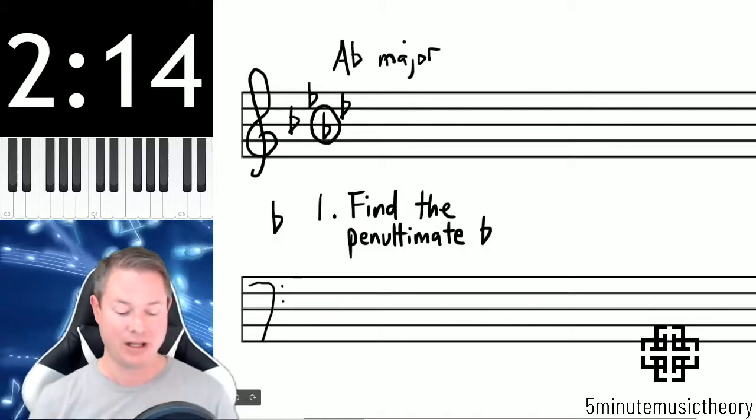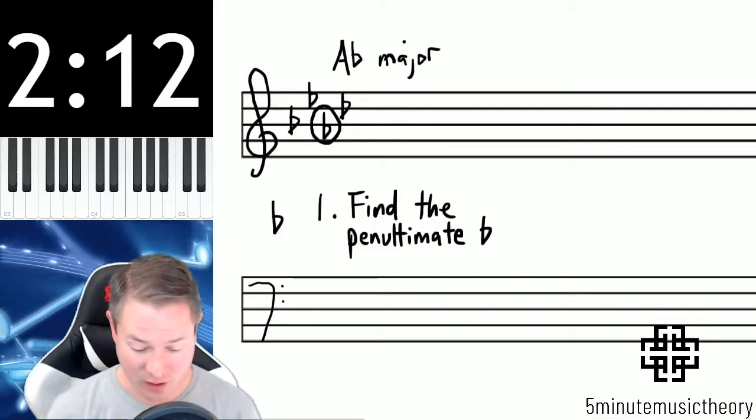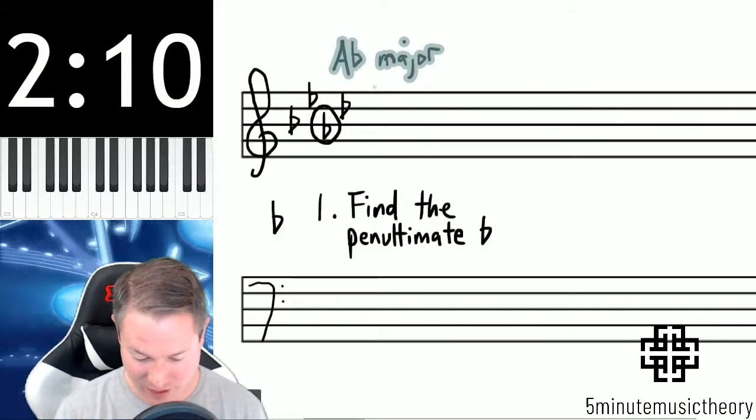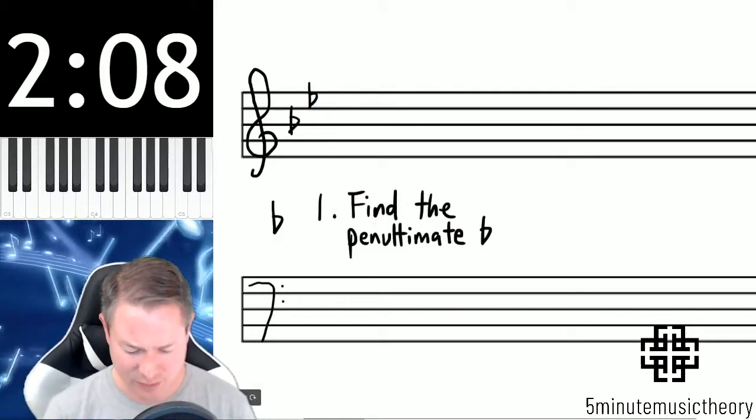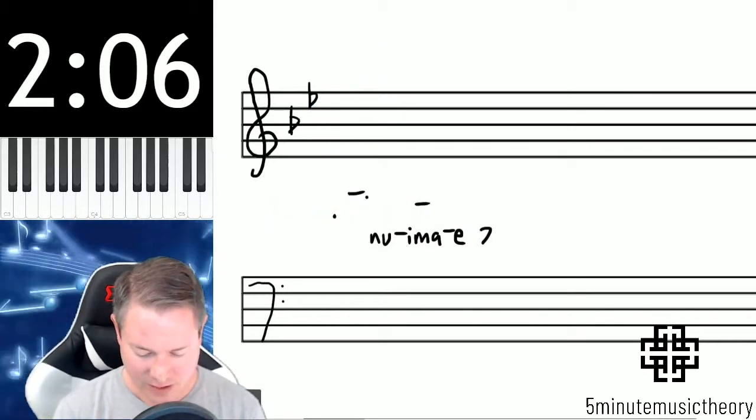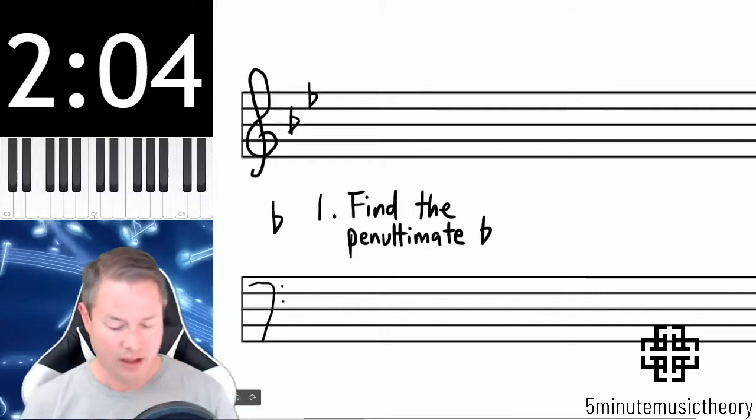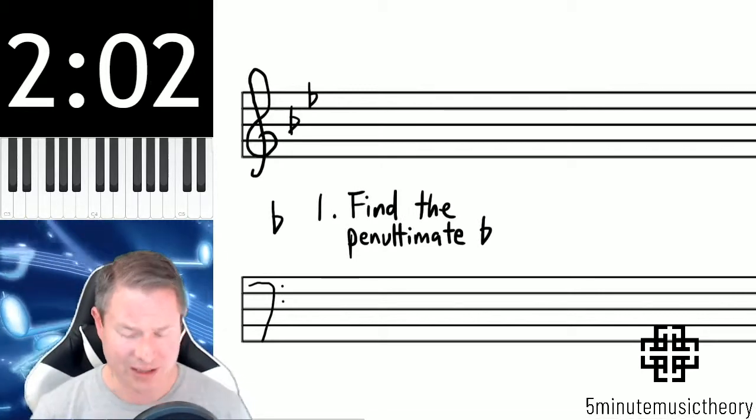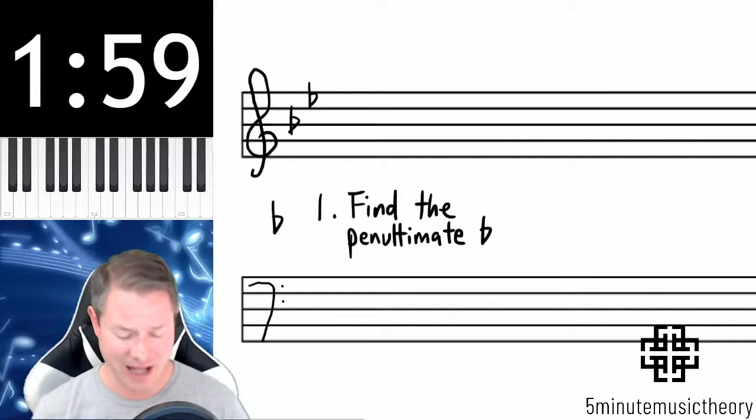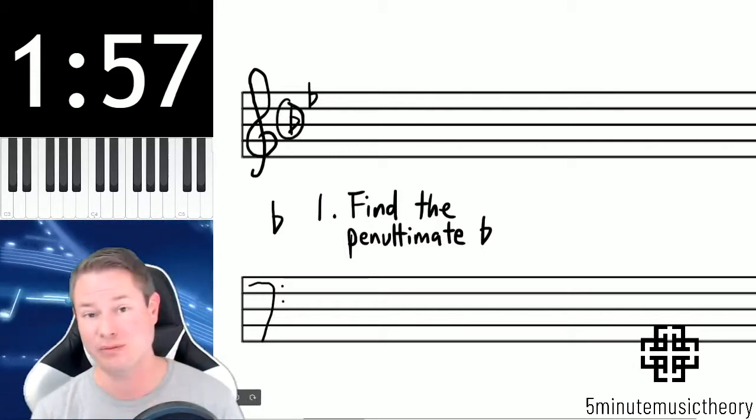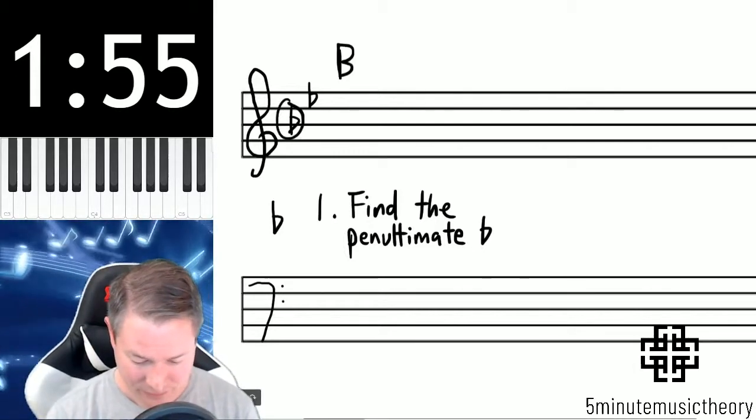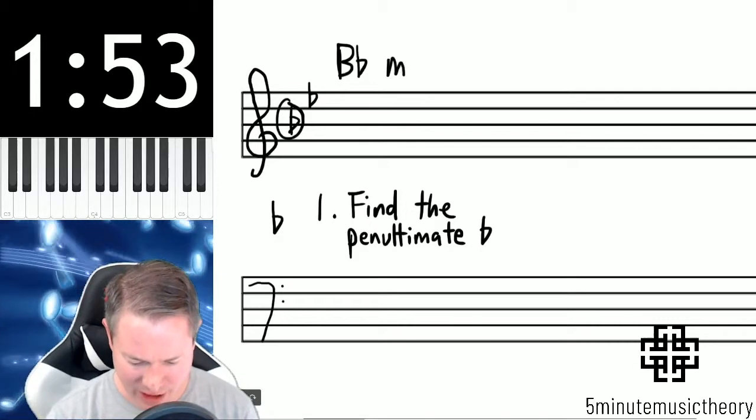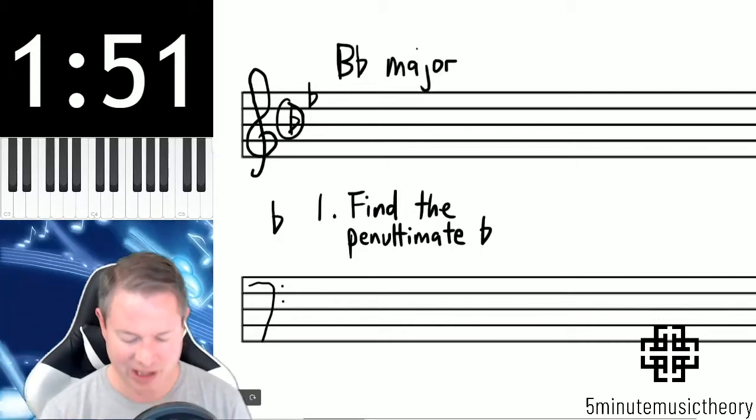Again, remember, we're only doing major keys. So A flat major has four flats. If I get rid of a few of these flats, we're left with two. Why did I do that? I'm going to put those back. We'll follow the same process, and we'll end up with the correct answer. The last flat is E flat. Second to last flat happens to be the first flat as well. B flat major would be that major key.